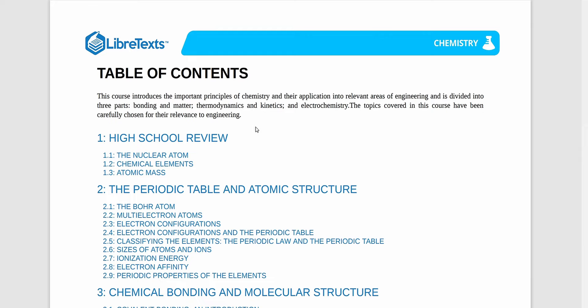In terms of required materials for this course, there's really only one thing you need to purchase, and that is the access code for Achieve, which can be found on the UBC Bookstore website. The name of the access code is listed on screen right now and it costs around $35.55. Additionally, there is an optional textbook for CHEM 154 that can be accessed online for free — I'll leave a link to it in the description below.